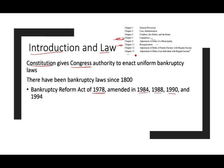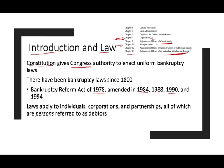Chapter 13 is adjustment of debt to individuals with regular income. Chapter 9 is adjustment of debt of a municipality when a municipality goes out of business. The law applies to individuals, corporations, and partnerships — all of which are persons referred to as the debtor. We have debtors and we have creditors.